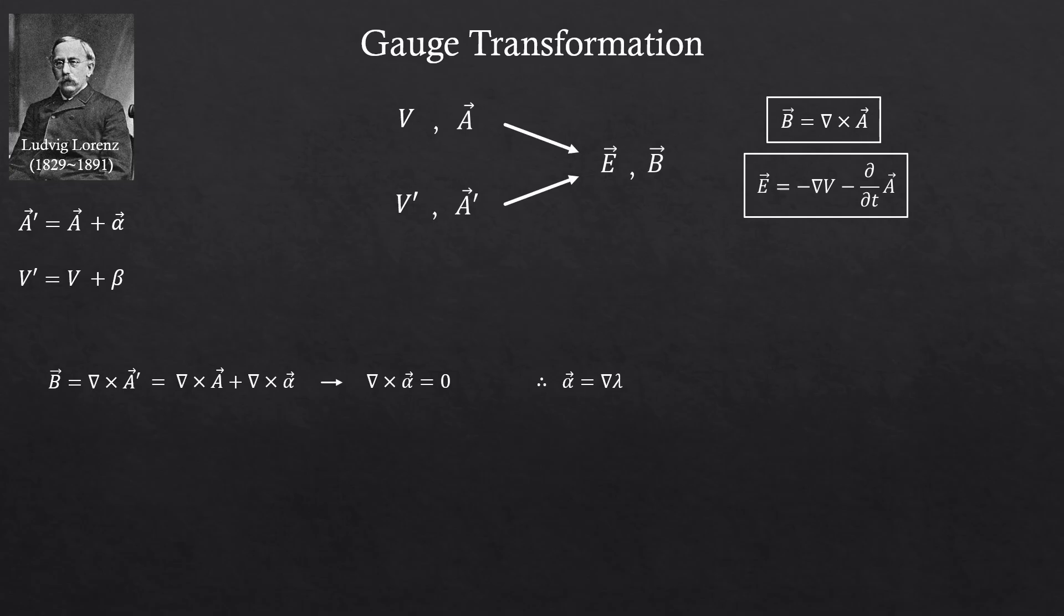Now, if we do the same thing for the electric field definition, we see that these two terms together have to be zero as well, right? And instead of alpha, if we plug in del lambda, we can rewrite the expression like this. So, then beta must be negative d lambda over dt, make sense? Because since the right hand side is zero, we can remove the del operator and that gives us that result.